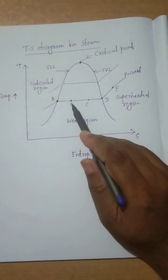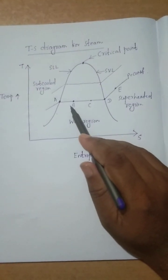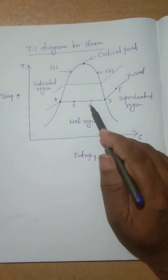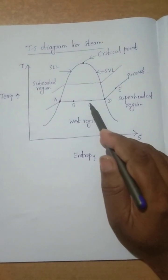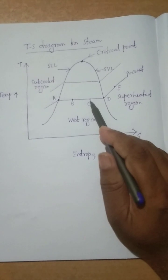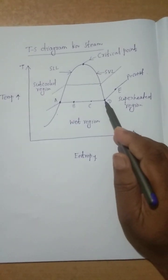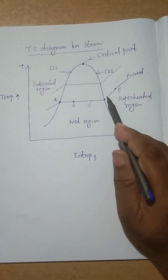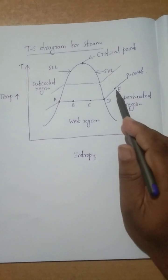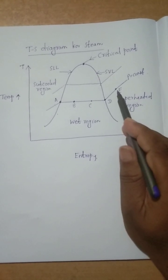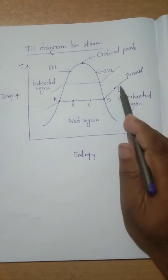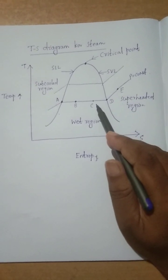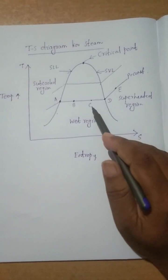Points B and C lie in the wet region. If the working substance is present at point B or point C, we call this wet steam. If the working substance is present at point D, we call it dry saturated steam. If the working substance is at point E, we call it superheated steam.